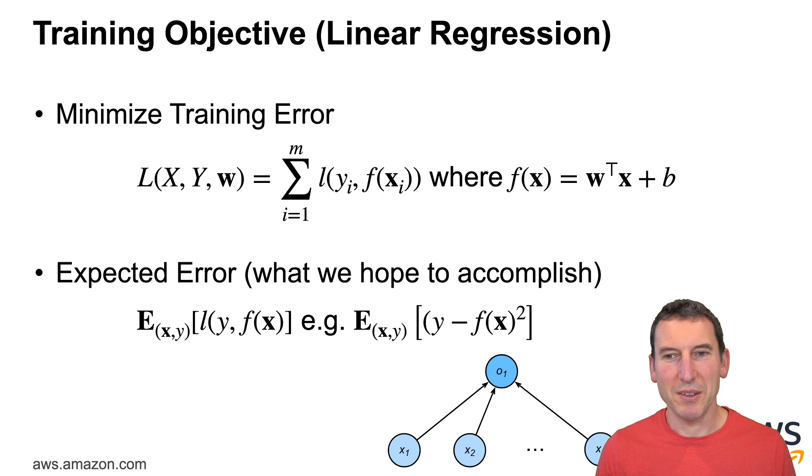But what I really care about and what I really should be trying to do is to minimize the expected error. Just based on the historical data there's no guarantee that in expectation of the new houses that I'm going to be put to the test on I will actually do well. But that's really what we hope for, namely that in expectation the loss between y and f of x, for instance y minus f of x squared, is minimized.